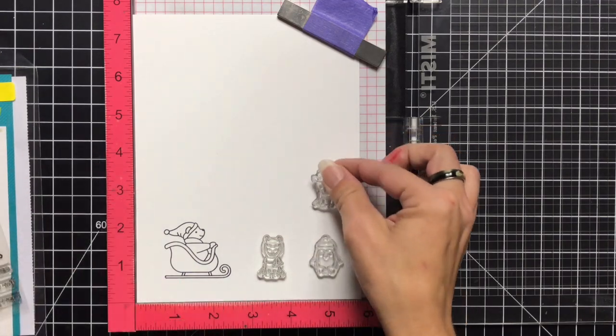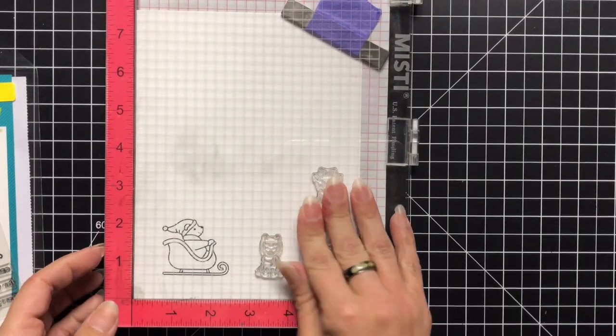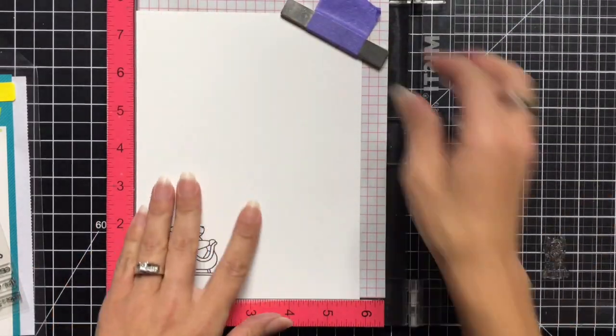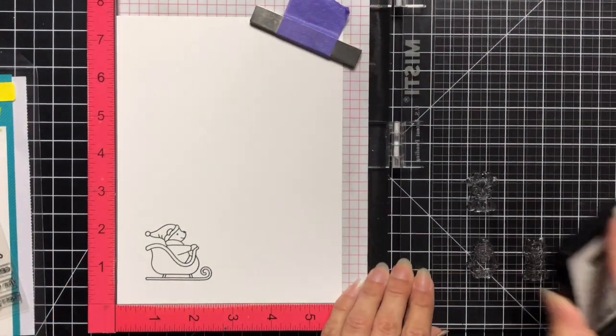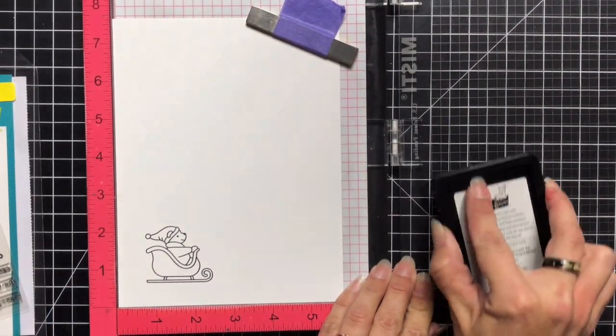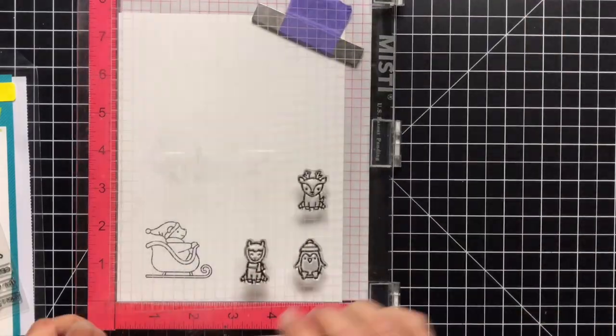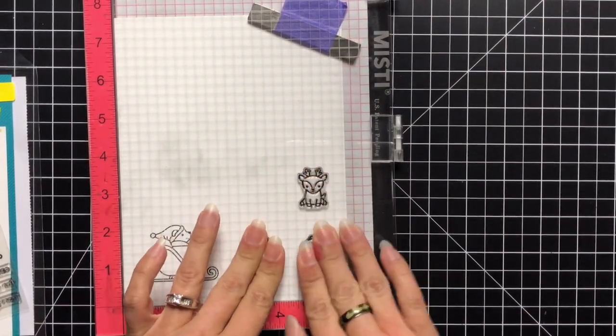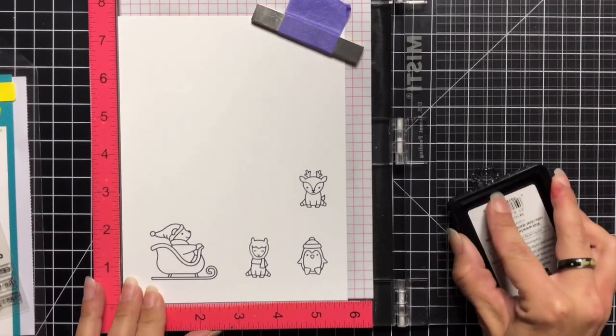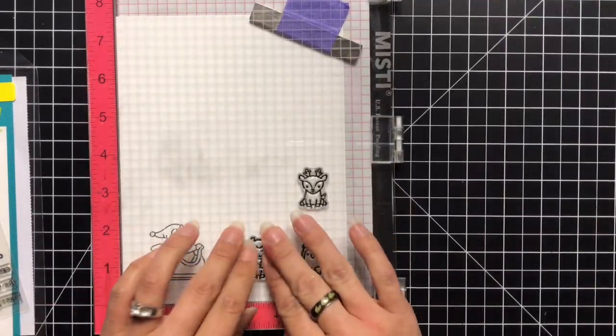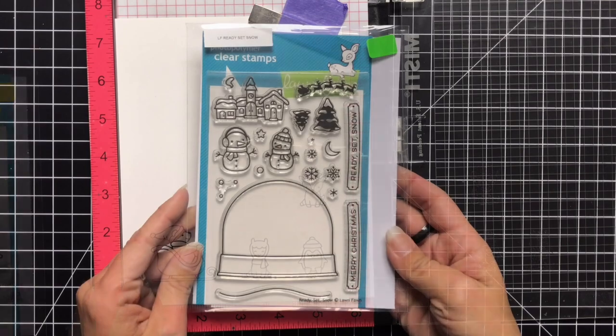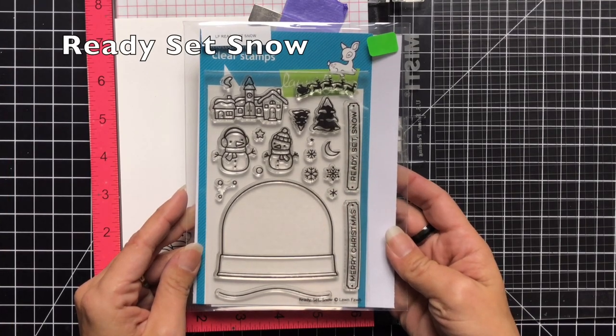So I'm just using three of the images from the stamp set and I'm going to stamp those down onto my cardstock with the Jet Black ink. Now I am using my Misti tool to stamp all of my images but you could just use an acrylic block and that would work just as well. So I gave these little critters, I stamped them twice just to make sure there was that nice black outline.